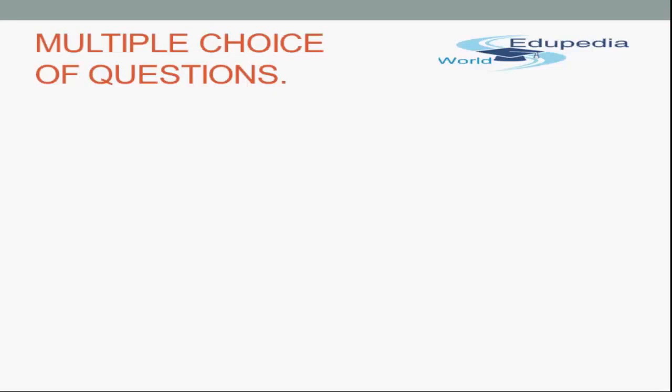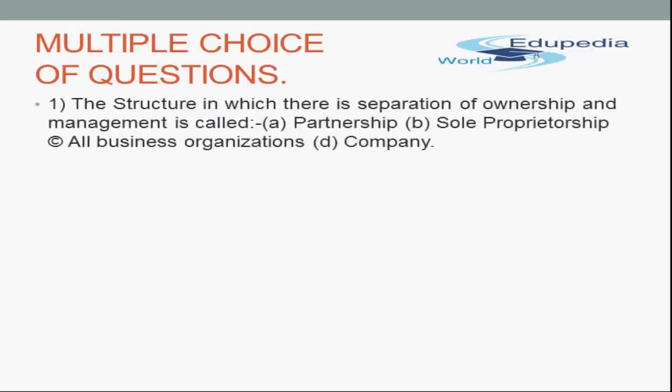The second category of questions in the examination is multiple choice questions, where you have to mark the tick against the right choice. Before that, you must have in your mind the definition of a particular item, its features, merits, and demerits — you will find the answers automatically. Let us take the first question: the structure in which there is separation of ownership and management is called — partnership, sole proprietorship, all business organizations, or company.